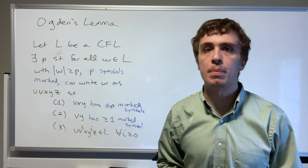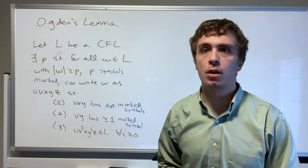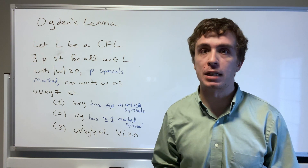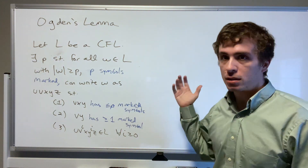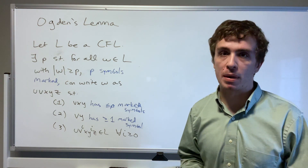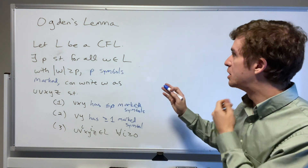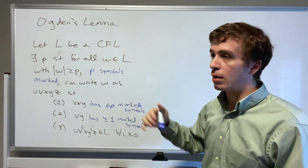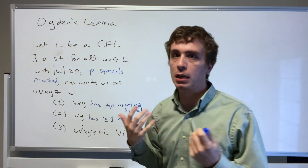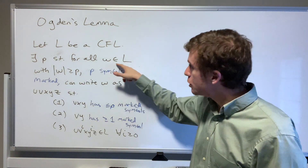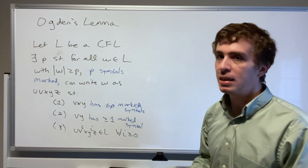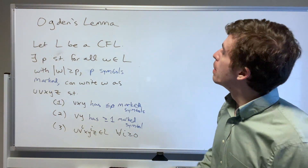We're going to be proving a really awesome result called Ogden's Lemma, which is a nice generalization of the pumping lemma for context-free languages. I've written it here — the parts in blue are what changed from the usual pumping lemma for context-free languages. It says we have a context-free language, and there is a pumping constant p such that for any string in the language that has at least p characters in it.